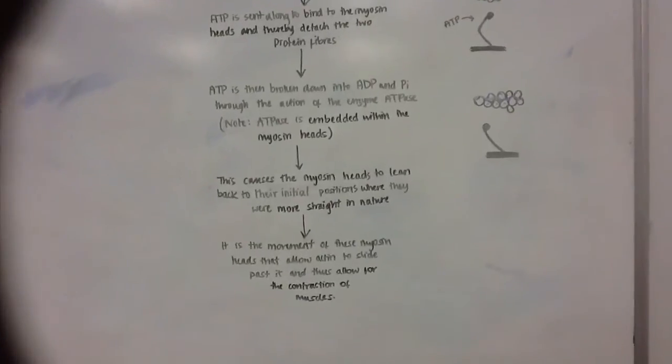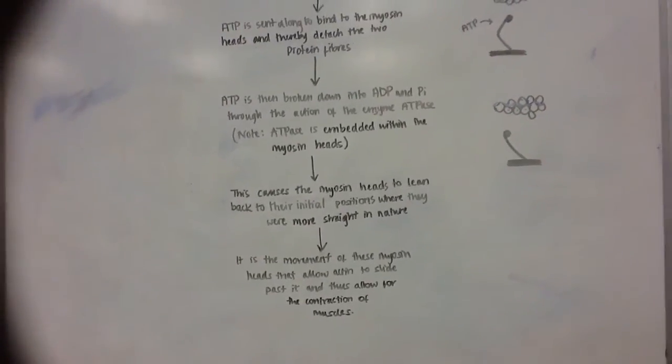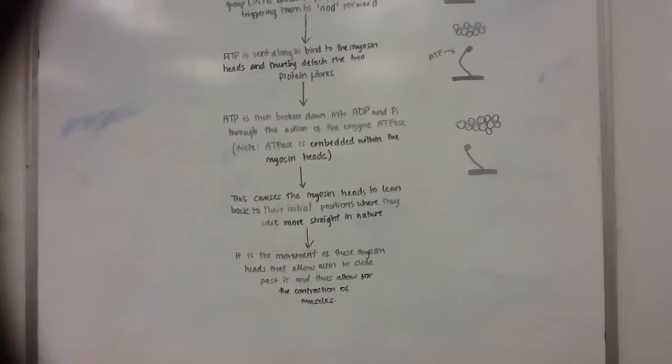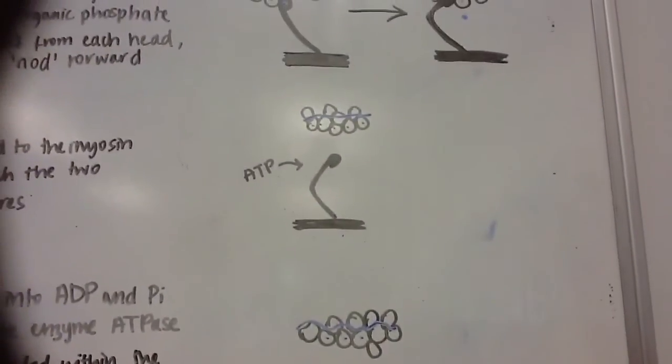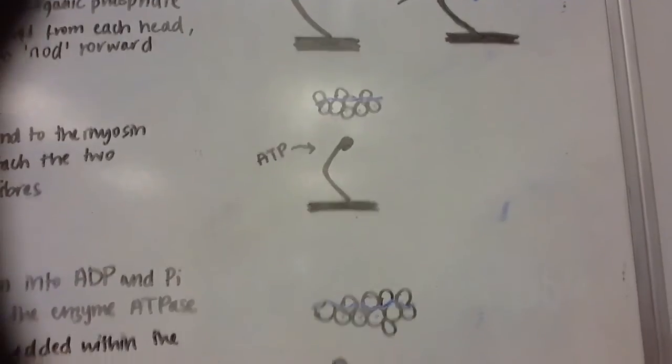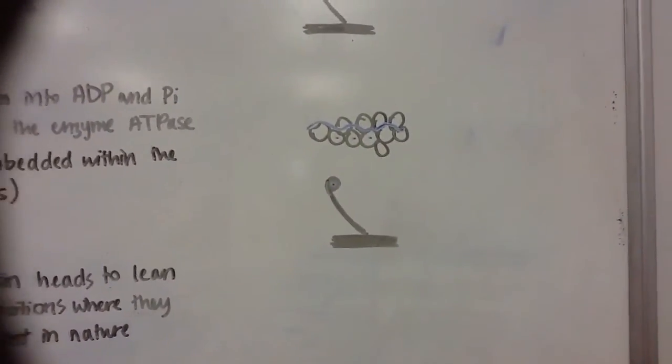Now, this will cause the myosin heads to lean back to their initial positions, where they were more straight. So from here, from being slightly nodded forwards to this straighter nature.